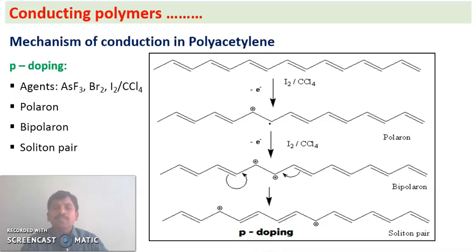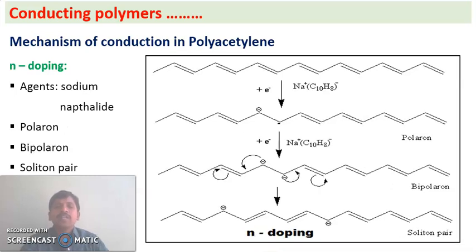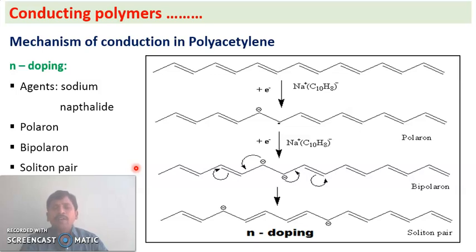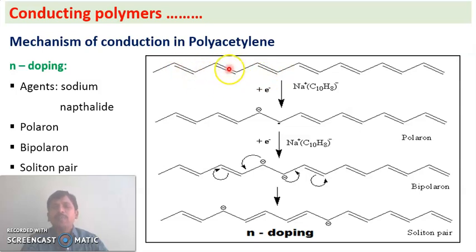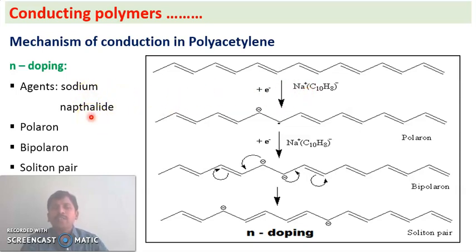Next is the mechanism of conduction in polyacetylene by n-doping. N-doping is negative doping — it involves the insertion of negative charge into the substrate. Polyacetylene with alternating double bonds (conjugation) is treated with electron-rich species such as sodium naphthalide, which is also called the n-doping agent.